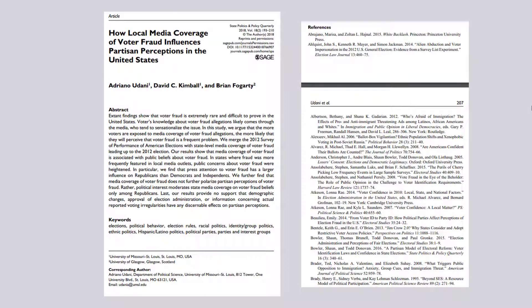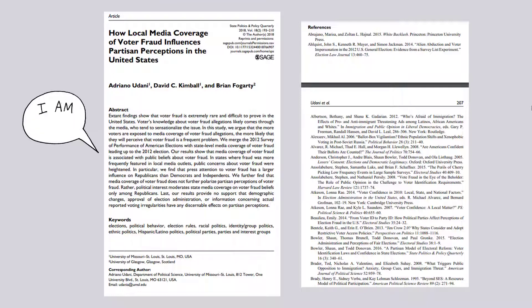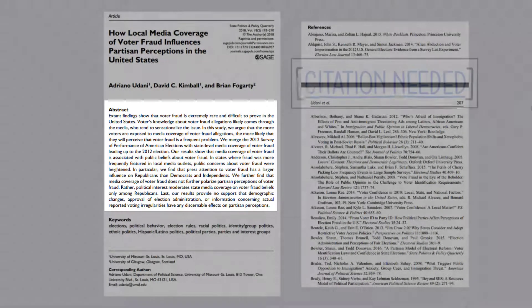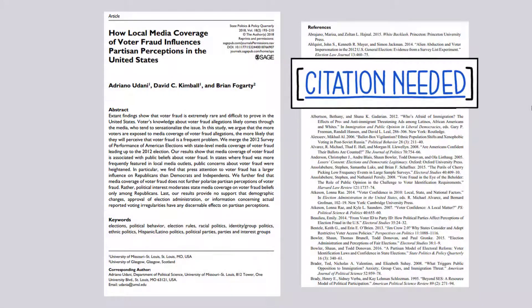Scholarly articles are probably a bit different from other source types you might be used to reading. They're usually substantially longer than a news article or other popular source. They also often have abstracts and long lists of references or works cited either at the end of the article or in the footnotes throughout.